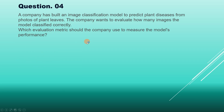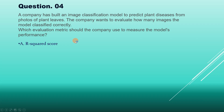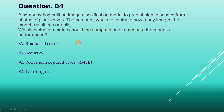Question 4: A company has built an image classification model to predict plant disease from photos of plant leaves. The company wants to evaluate how many images the model classified correctly. Which evaluation metric should the company use to measure model performance? Options: A) R-squared score, B) Accuracy, C) Root mean squared error, D) Learning rate.